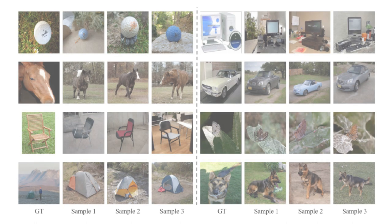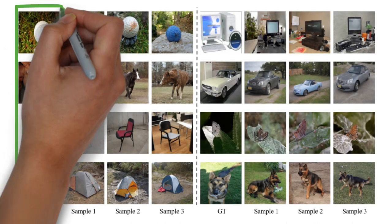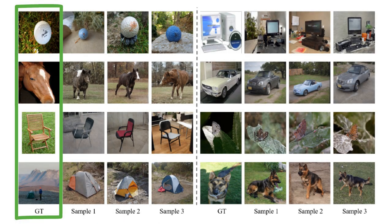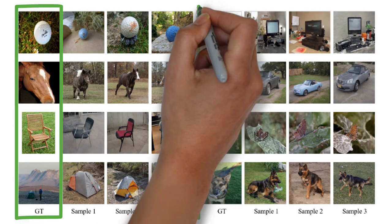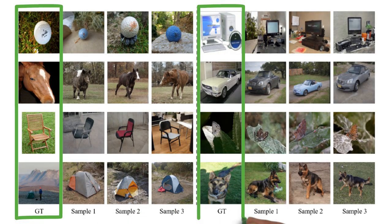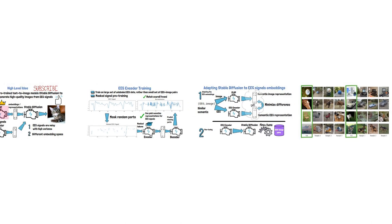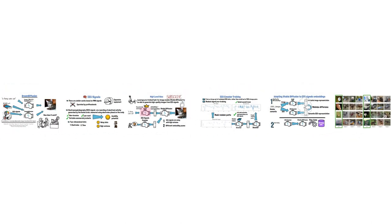The paper also shares some results. Here we can see on the left a ground truth image which matched an EEG signal in the dataset, and to the right of each ground truth image we can see 3 samples from Dream Diffusion for the same EEG signal, which looks very impressive. Thank you for watching and I hope to see you again in the next video.